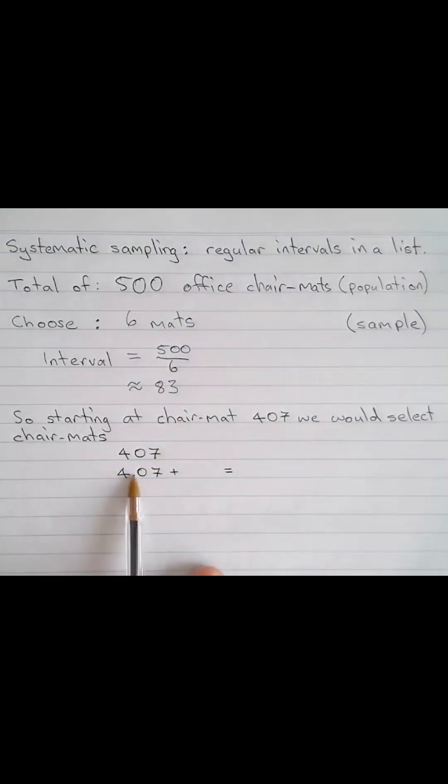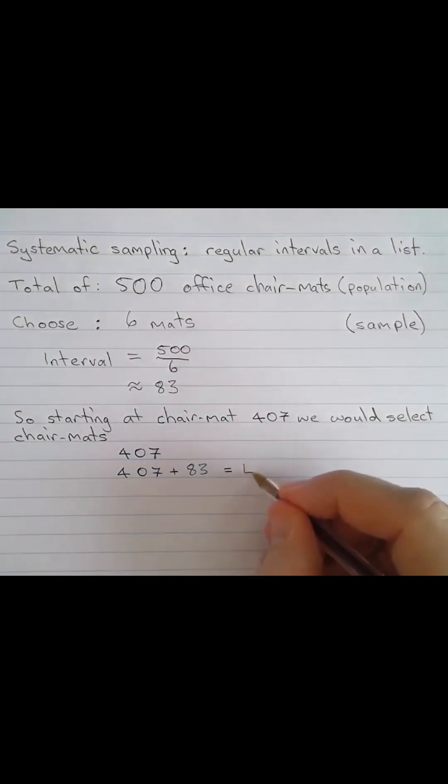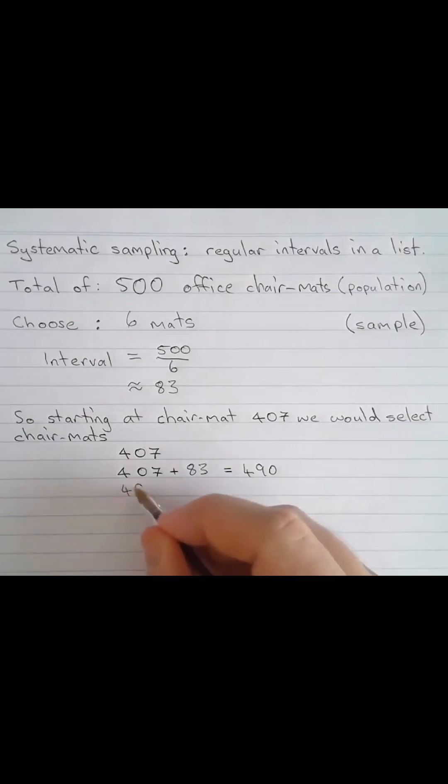So we're going to start with number 407. Then we want to move by the regular interval of 83. 407 plus 83 will give us 490. Again, the regular interval of 83.